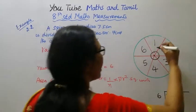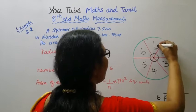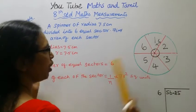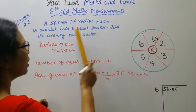Radius is 7.5 cm, 6 equal parts: 1, 2, 3, 4, 5, 6 parts.